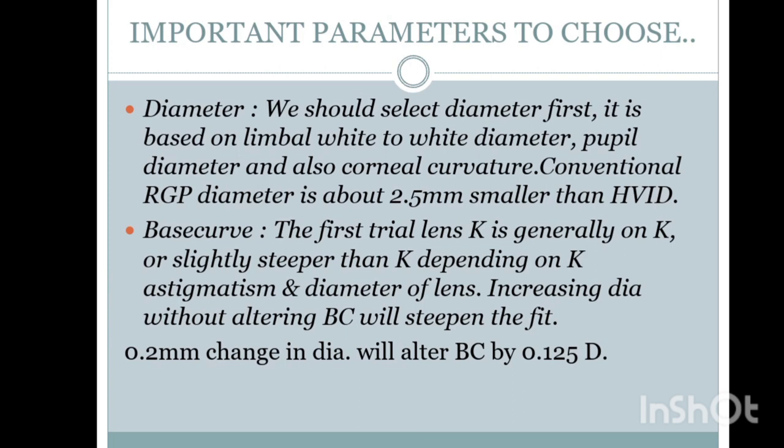How to select the base curve? The first trial lens base curve is generally on K — meaning the average K — or slightly steeper than K, depending on K, astigmatism, and diameter of the lens. In some conditions we fit on K, on flat K, or other calculations may apply. Increasing diameter without altering the base curve will steepen the fit, and decreasing the base curve will also steepen the fit — be very careful.